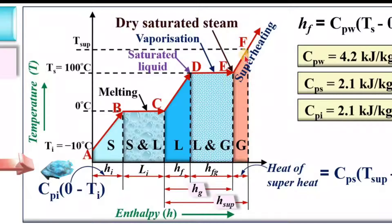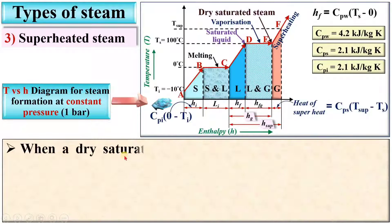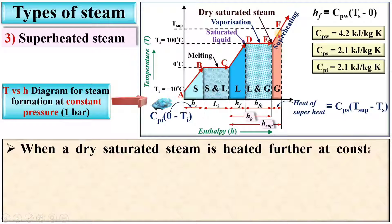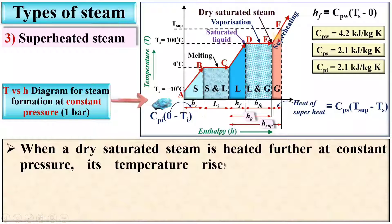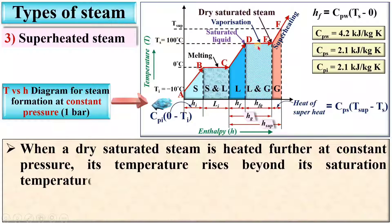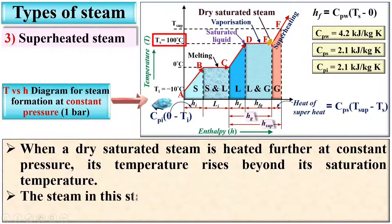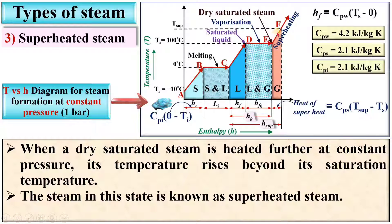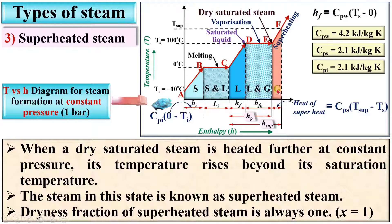The third type is superheated steam. In this figure, E to F is called the superheating process, so beyond point E there is superheated steam. When dry saturated steam is heated further at constant pressure, its temperature rises beyond its saturation temperature — the steam in this state is known as superheated steam. In the superheated zone it is completely gaseous phase, meaning there are no water molecules, and so the dryness fraction of superheated steam is always equal to 1.